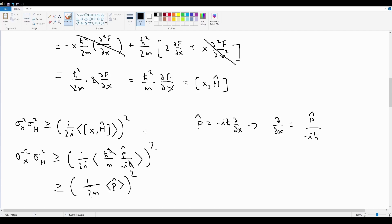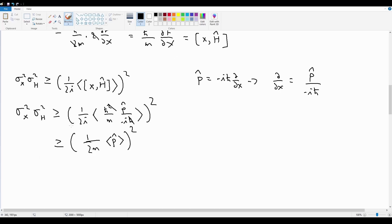At this point, we can just get rid of the squared and just redefine our uncertainty principle. So sigma x sigma H, because I just take the square root on both sides, is going to be greater than or equal to 1 over 2m.